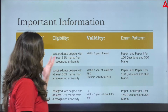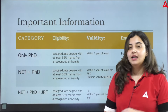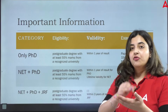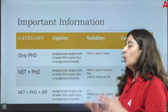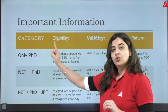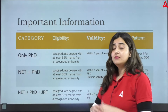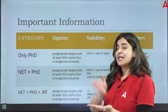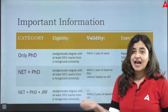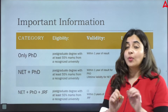Now let's understand some important information about this examination. You need the UGC-Net exam for three separate categories: first, only to apply for PhD; second, to qualify as an assistant professor — NET and also PhD; and third, NET, JRF and PhD. These are the three categories under which you can apply for the UGC-Net exam starting from the session of 2024.